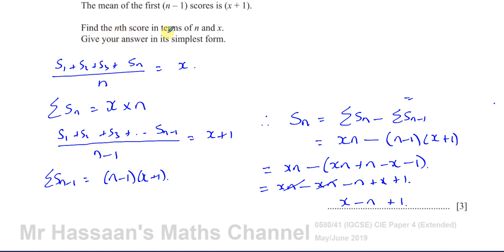And we're left with our answer: x minus n plus 1. Give your answer in terms of n and x — that's it, in its simplest form. To recap: the mean of the first n scores is x, so the sum of the first n scores is xn. The mean of the first n minus 1 scores is x plus 1, so the sum of the first n minus 1 scores is (n minus 1)(x plus 1). The nth score is the difference between them.